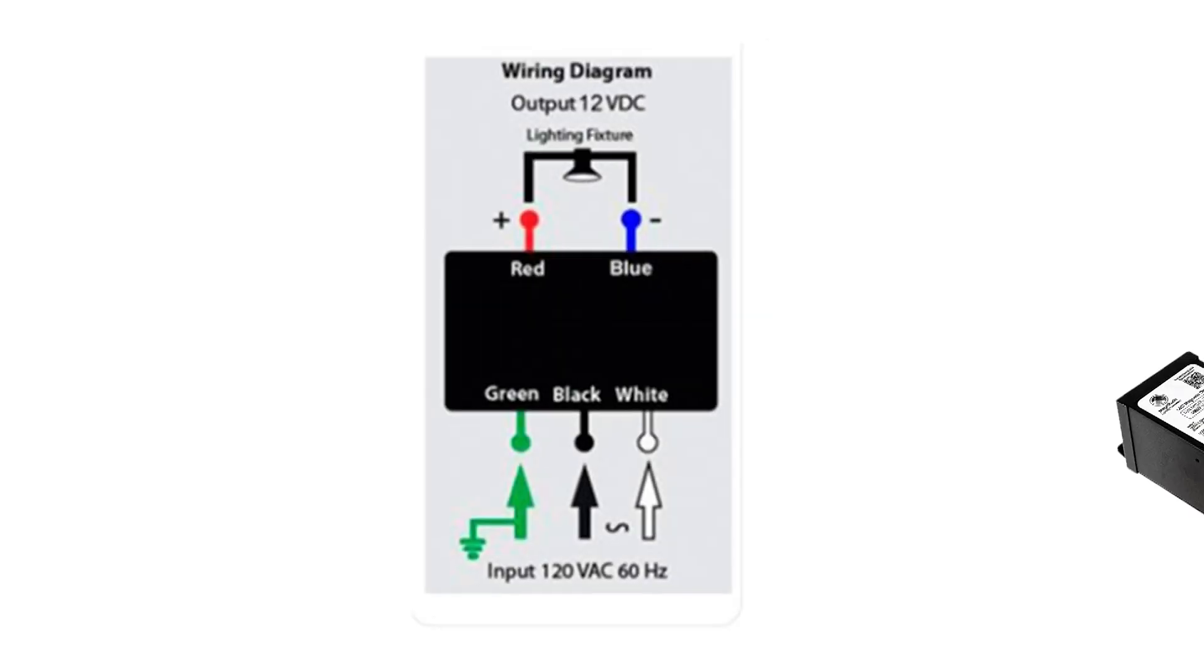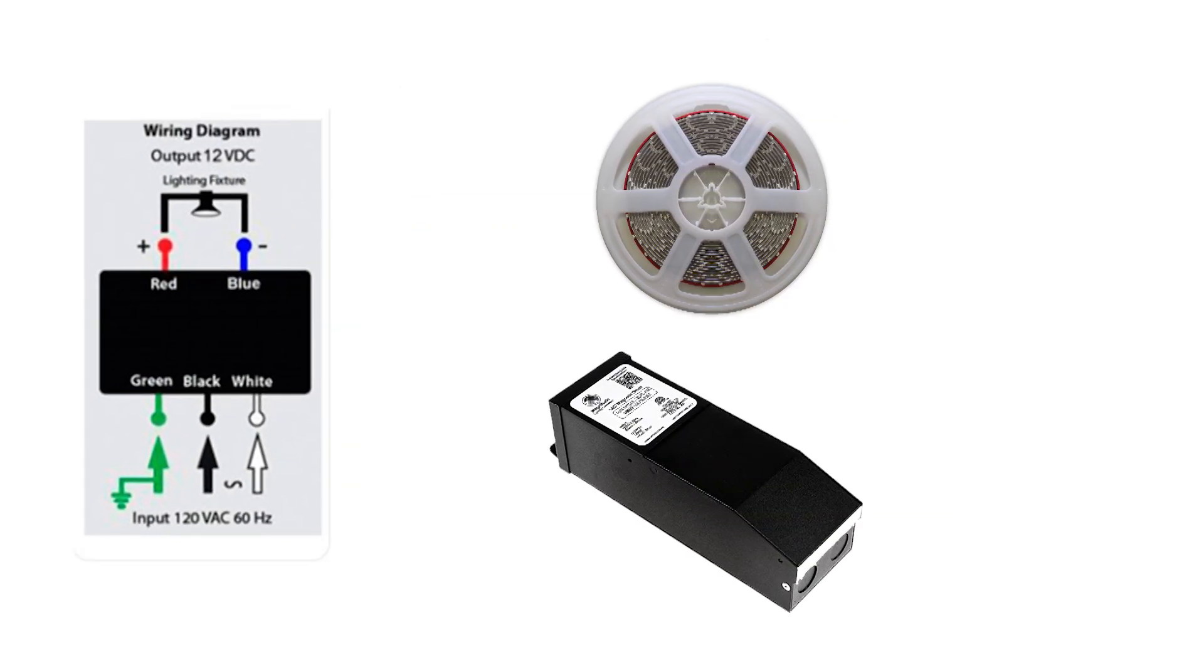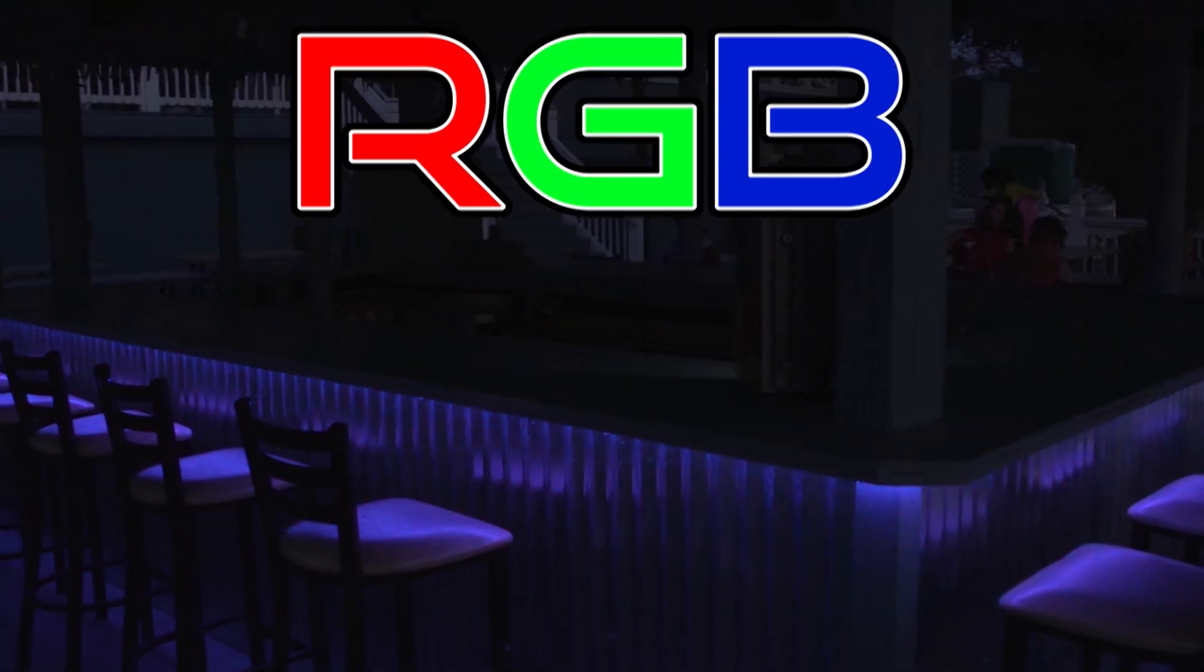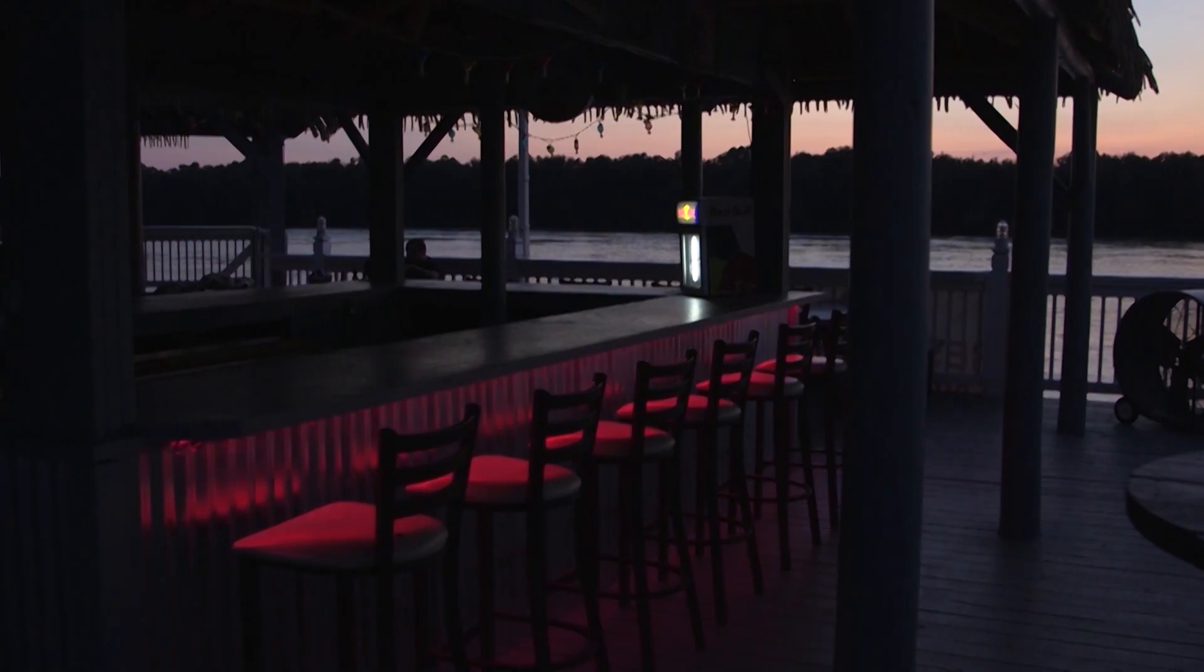With the dimmable power supplies, all strips will be powered directly from the power supply and no other materials are required. Do not use the magnitude dimmable power supply if you're using an RGB color changing strip.